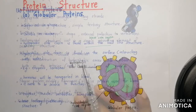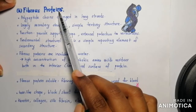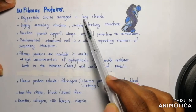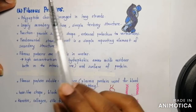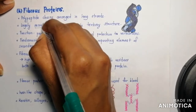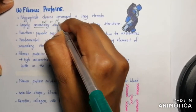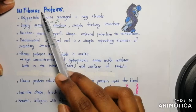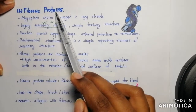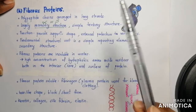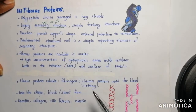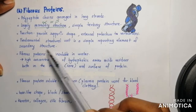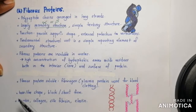The next structure of protein is fibrous protein. Fibrous proteins consist of polypeptide chains arranged in long strands. They are largely secondary structure, meaning they are either in alpha helix or beta conformation, and they consist of simple tertiary structure. Most fibrous proteins function to provide support, shape, and external protection to vertebrates. The fundamental structural unit is a simple repeating element of secondary structure — a repetition of alpha helix or beta structure.